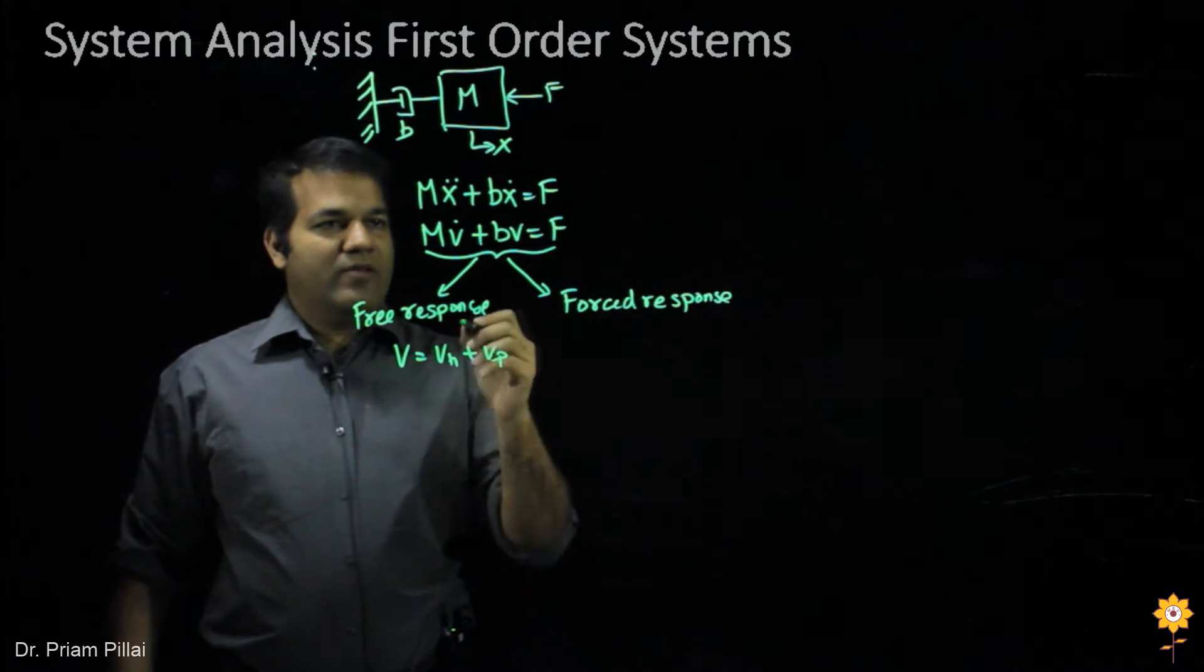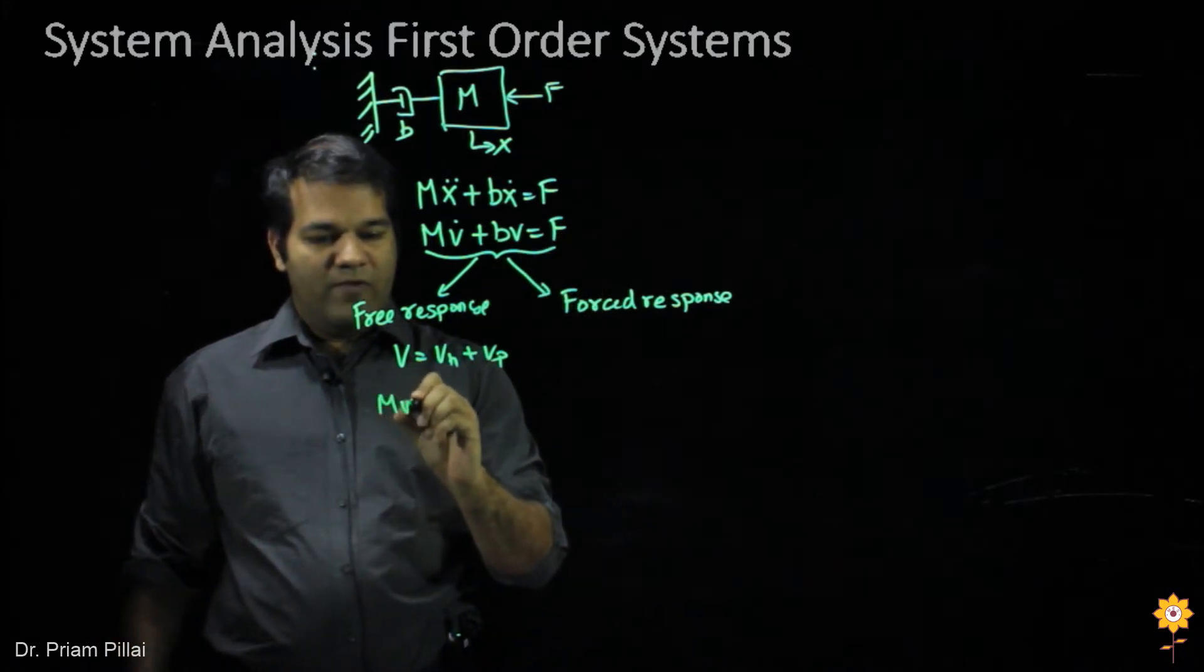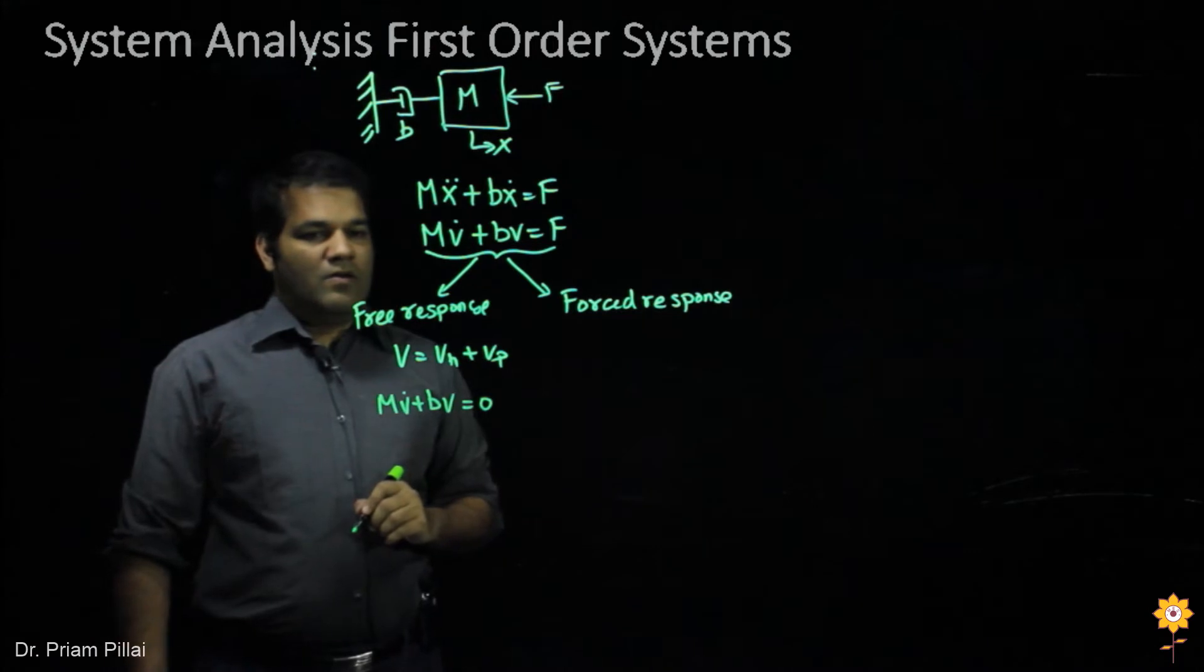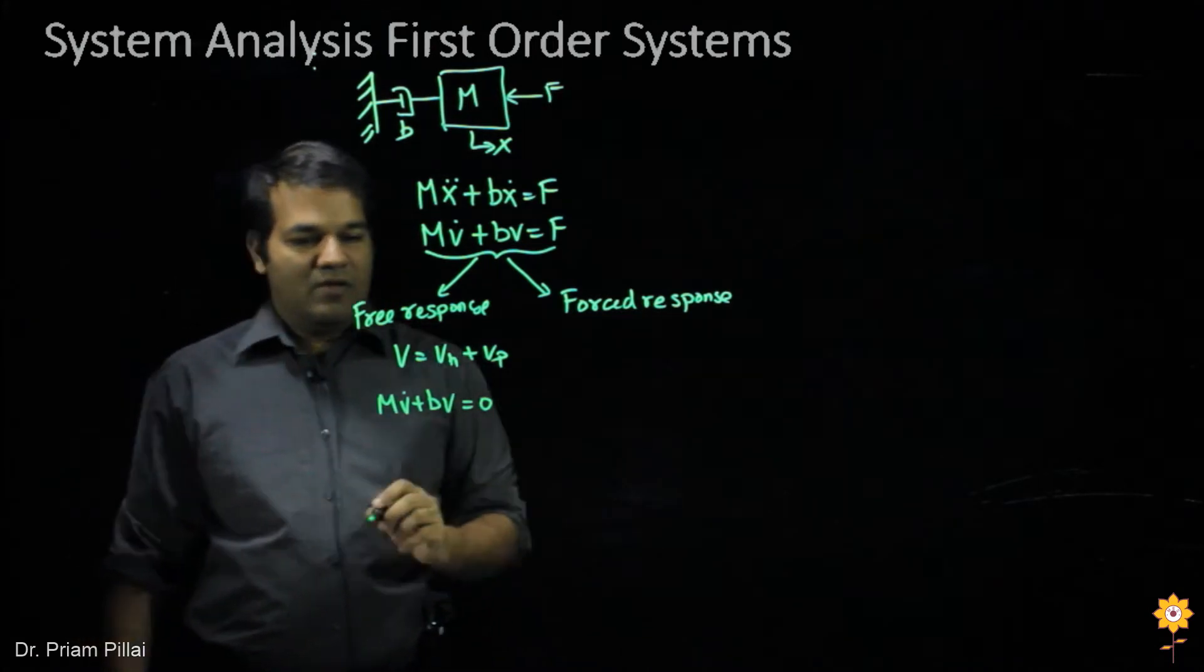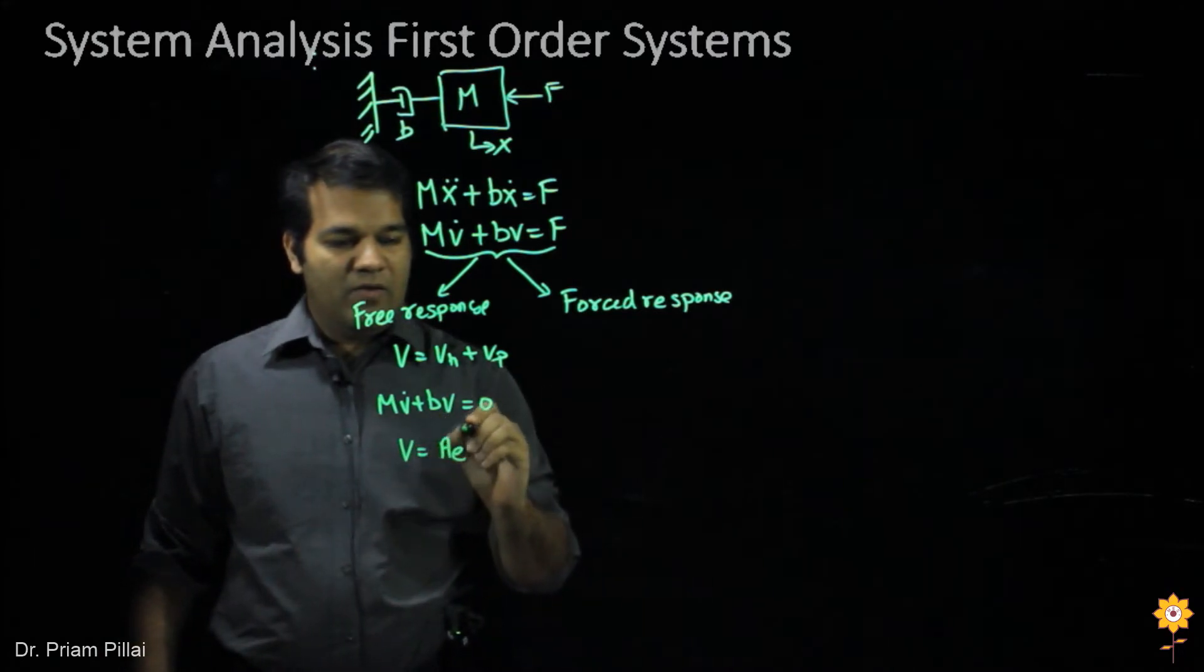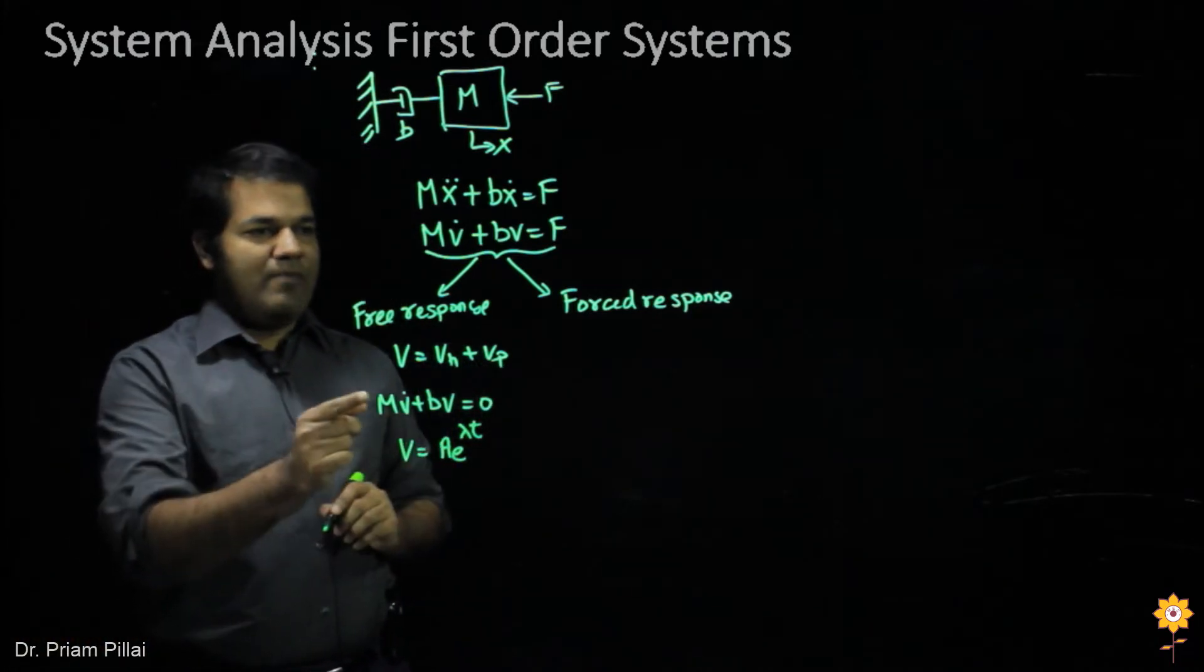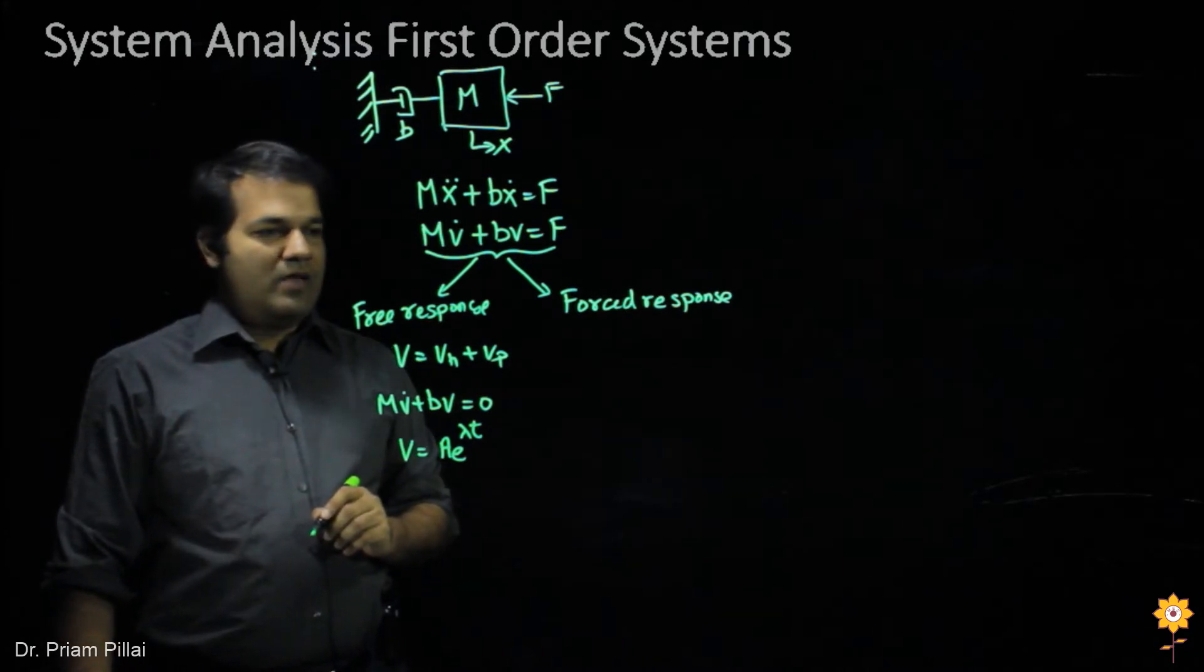So to get the free response, let's assume that this force, the input force is zero. So mv dot plus bv equal to zero. You might recall that the solution to this differential equation would look like v equals ae to the lambda t. So we would assume a form of that solution and we would substitute that back into this equation.